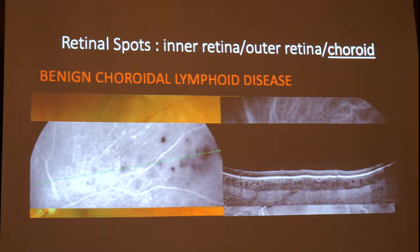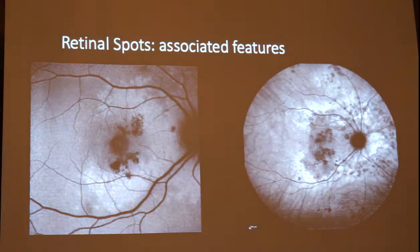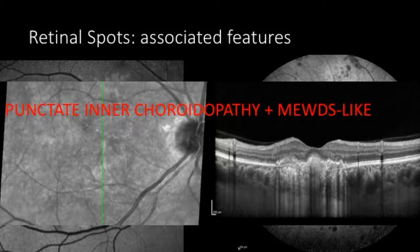Another element about retinal spots is the associated features. This patient presented with hypo-autofluorescent spots in the macula that were hypofluorescent on ICG, surrounded by a halo of hyper-autofluorescence that was hypofluorescent on ICG. The OCT showed hyperreflective inflammatory material between Bruch's membrane and the RPE, associated with outer retinal disruption. This is a case of punctate inner choroidopathy associated with a MEWDS-like reaction.